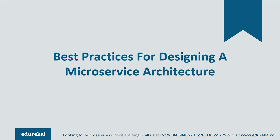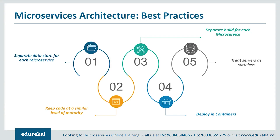Now that you've seen the Uber use case, here are the best practices to design microservices: first, separate the datastore for each microservice; keep the code at a similar level of maturity; separately build each microservice according to its respective features and then deploy into containers; and create the servers as stateless for communication.